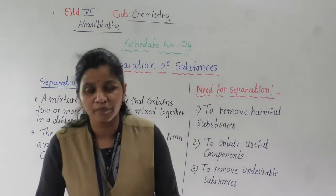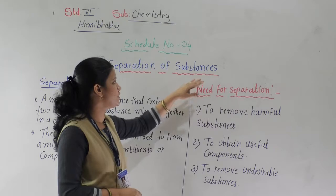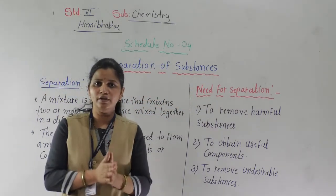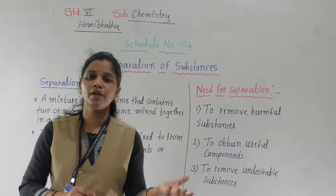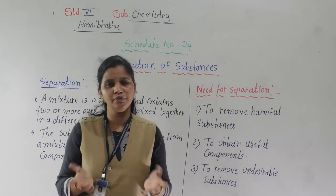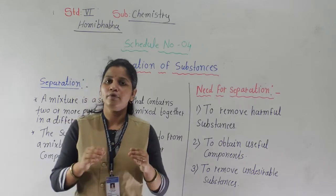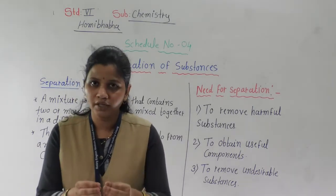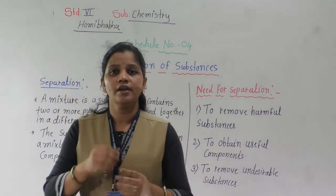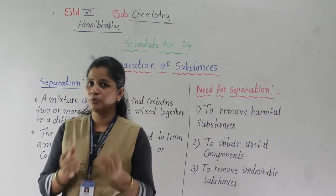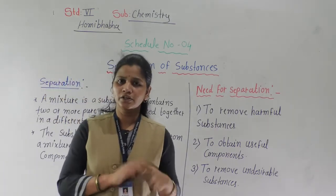In this chapter we are going to perform many practicals. The name of this chapter is separation of substances. Separation means we have to separate two or more things. Before that, let's recall a mixture. Mixture means if one or more substances we mix together, they form a mixture. Can anyone write two examples of a mixture? You know that there are two types of mixture: homogeneous mixture and heterogeneous mixture.